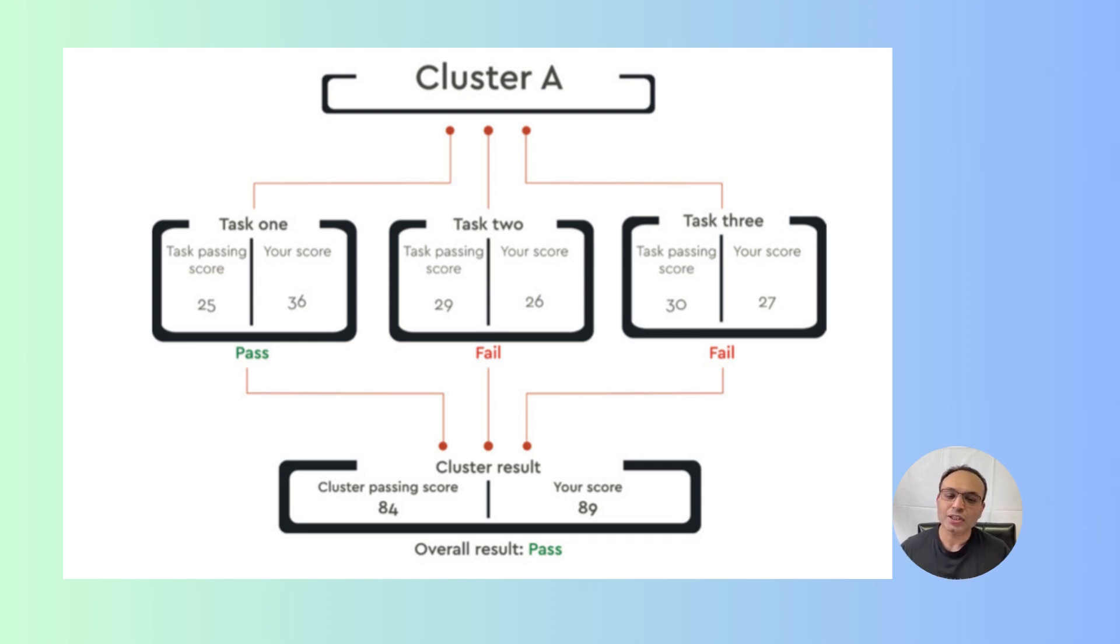But since you are so close to being passed and you have achieved a good score in one task, your overall cluster result or the cluster score is over what is needed. So if the cluster passing score is 84 and you were able to make it bare minimum to pass, for example in this case 89, you pass the whole cluster and that is what it is needed to pass the cluster.